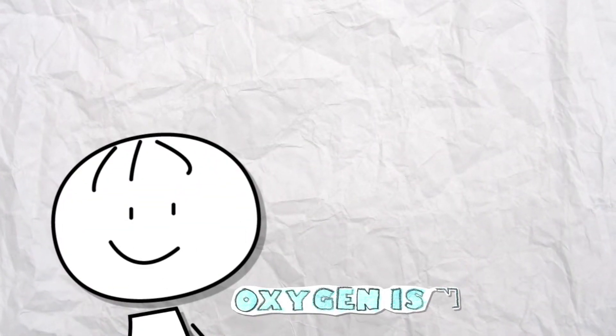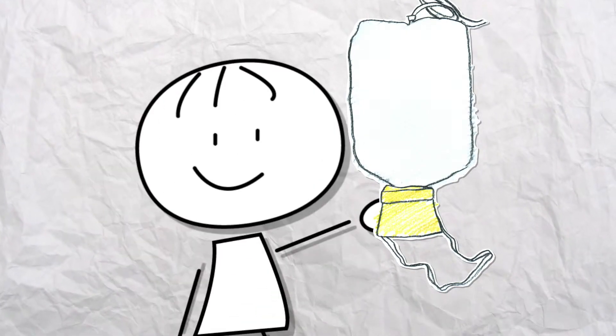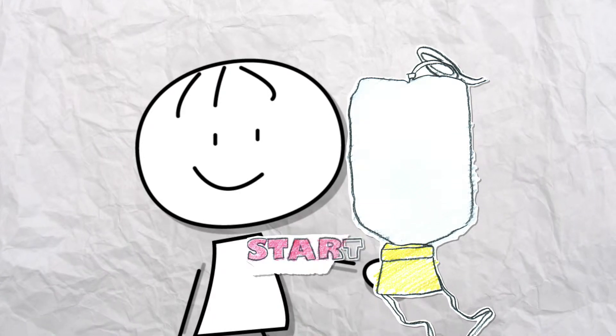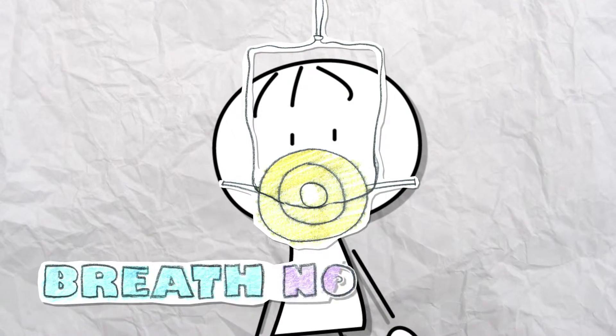If oxygen is needed, masks will drop down from the panel above your head. Pulling the mask down will start the flow of oxygen. Put the mask over your nose and mouth and breathe normally.